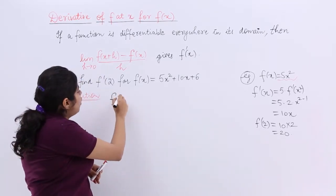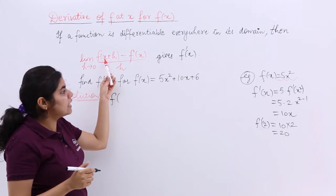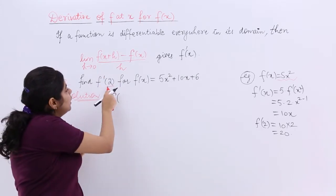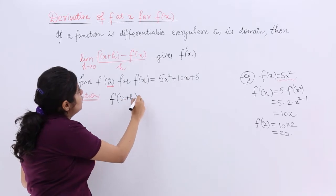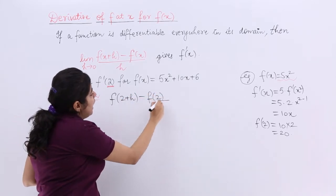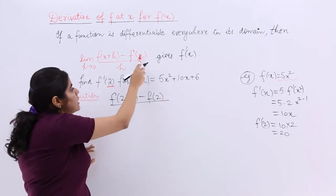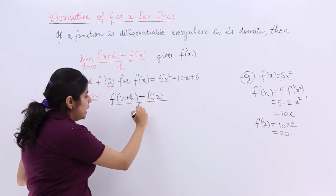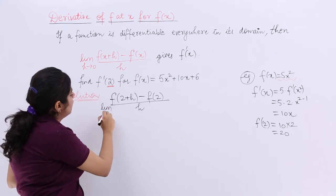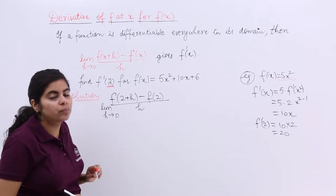So it is f of x plus h. What is x? x is what value they are talking about. They are talking about 2. 2 plus h minus f of x. Again what is x? What they are talking about upon h. Upon h limit h tends to 0.